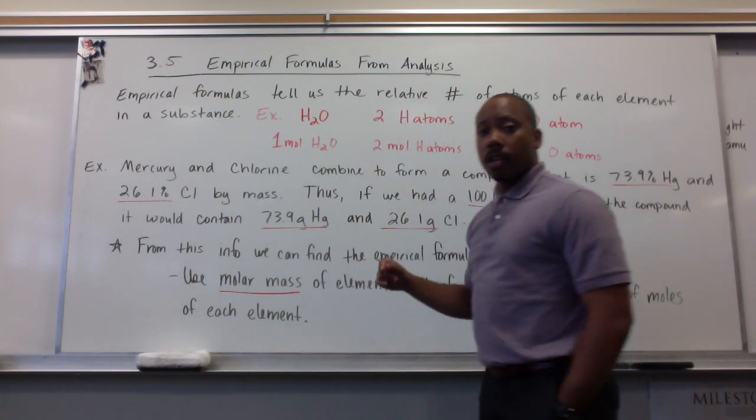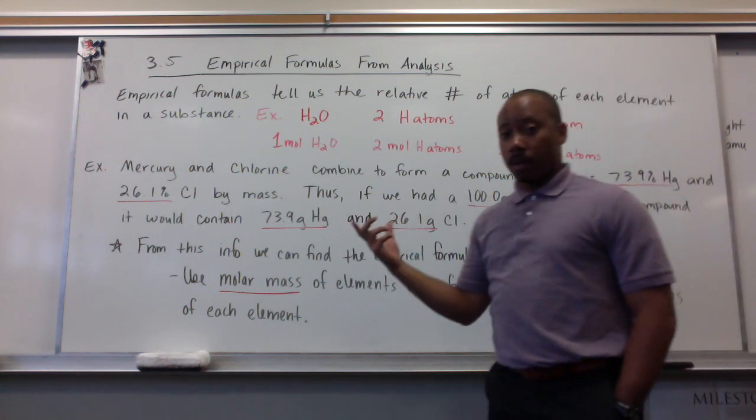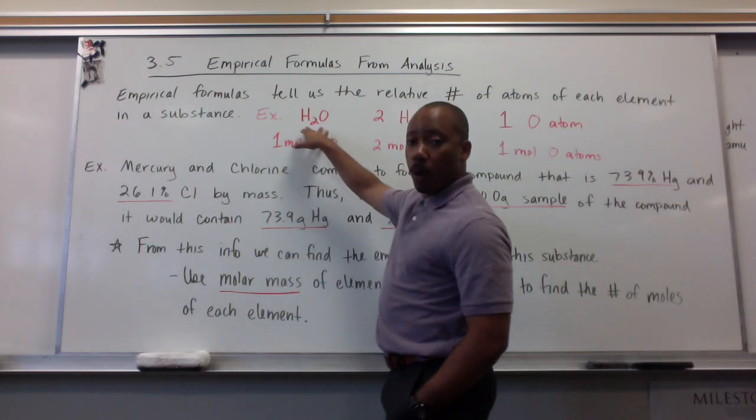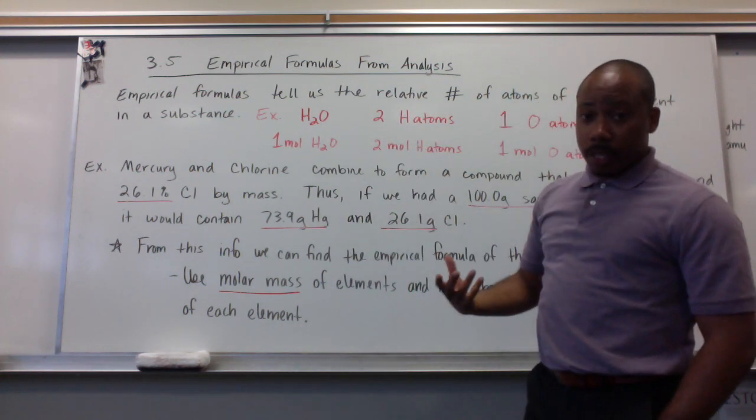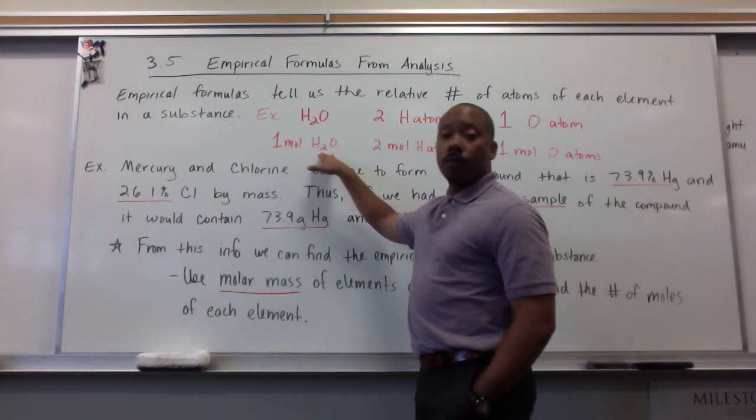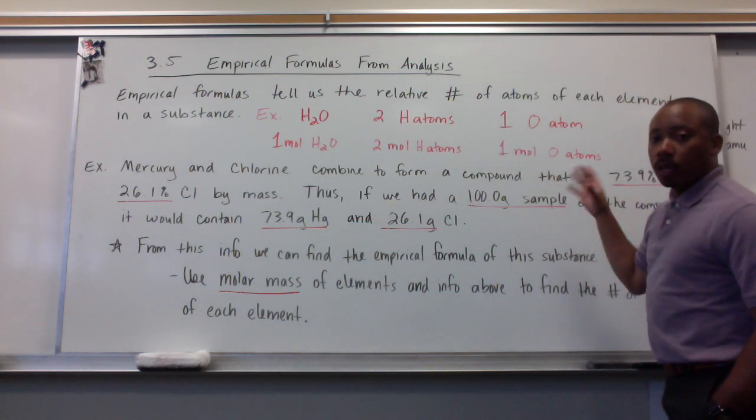Empirical formulas tell us the relative numbers of atoms of each element in a substance. For example, H2O is an empirical formula. It tells me I have two hydrogen atoms, one oxygen atom. I can also read it this way. If I have one mole of H2O, I have two moles of hydrogen atoms and one mole of oxygen atoms.